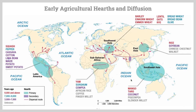In Southeast Asia, we get crops like mango and coconuts. These are some of the major early agricultural hearths. One more important one is the Indus Valley, which was in India. It was not just one of the first agricultural hearths, but one of the first major civilizations in the world.